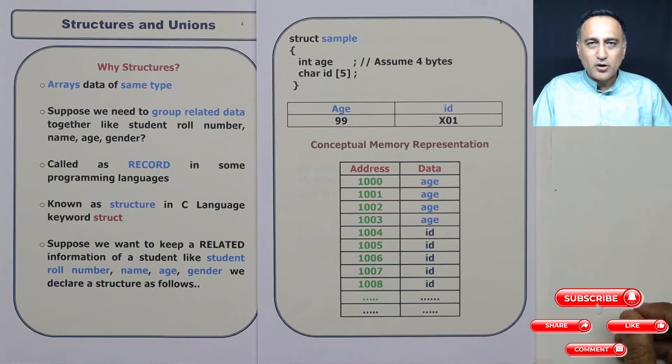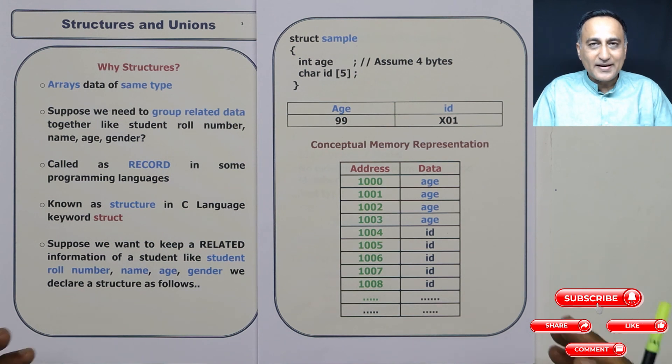Arrays help you to store related data of the same data type. Structures allow you to group related data. But the individual members of the structure can have different data types and most often they do have different data types.